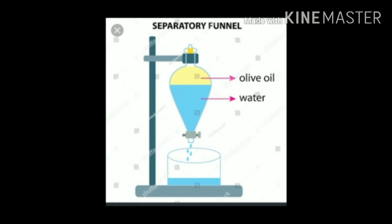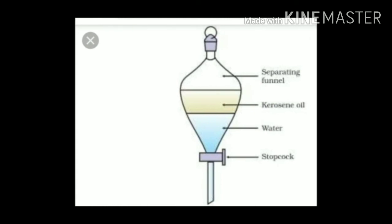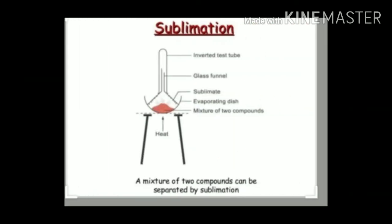Method 4: Separating a mixture of common salt and ammonium chloride. Some solids on heating change directly to their gaseous state without changing into liquid — this process is called sublimation. Common examples of solids which sublime are ammonium chloride, camphor, naphthalene, anthracene, and benzoic acid. To separate a mixture containing a sublimable volatile component from a non-sublimable impurity, the process of sublimation is used — for example, a mixture of common salt and camphor.